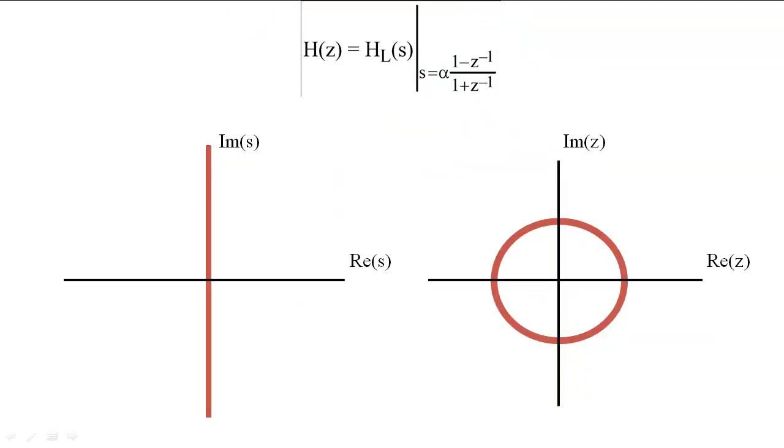The analog frequency response of the prototype filter can be found by plotting the function along the imaginary axis, in the same way that we can plot the digital frequency response of the desired filter by tracing the function along the unit circle. This means that we have to evaluate the result of the bilinear transform at e to the j omega.